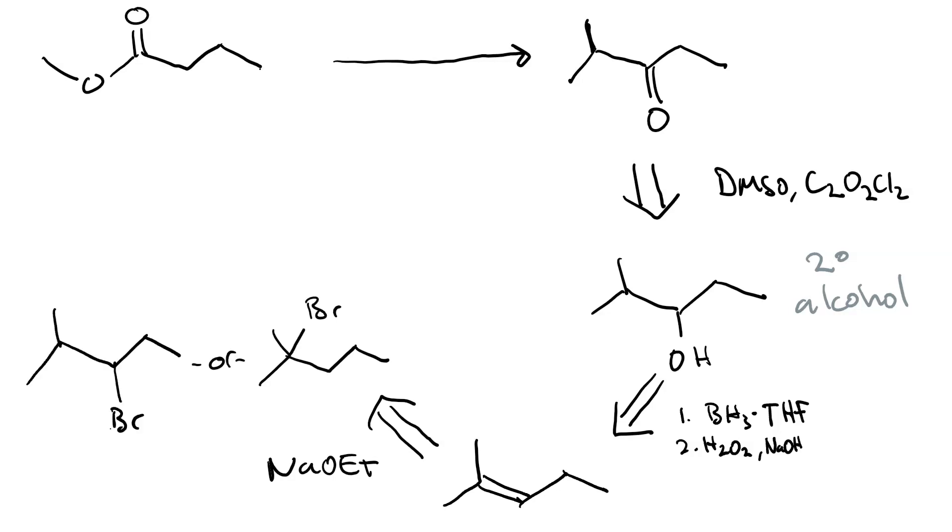We could do a Zaitsev elimination of 3-bromo-2-methylpentane using sodium ethoxide. For that matter, we could use 2-bromo-2-methylpentane as well. Well, at this point, it's a matter of considering the relationship between this and your initial compound. If we look at it, this fragment of the molecule, these four carbons, are going to come from this. So, we've added 2-methyl groups. And how would we add 2-methyl groups to an ester? We'd use excess Grignard.